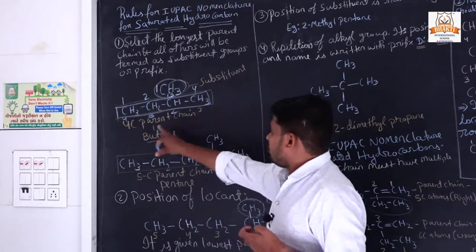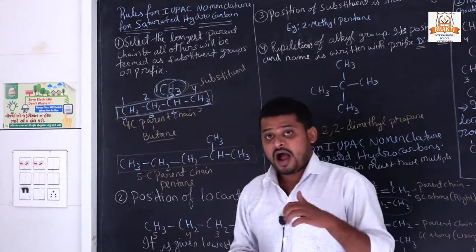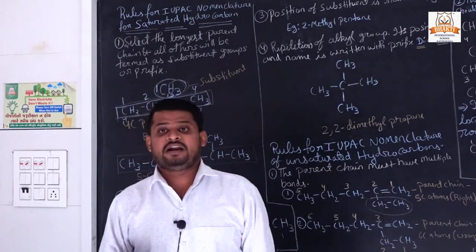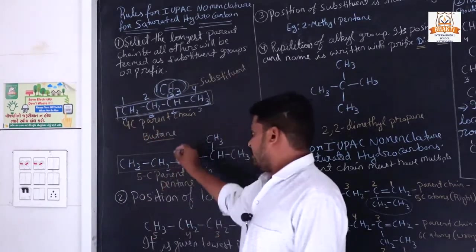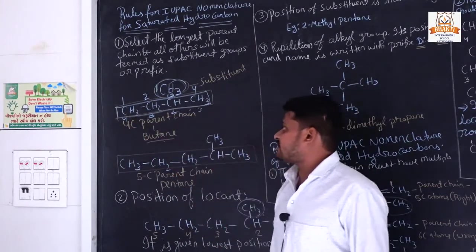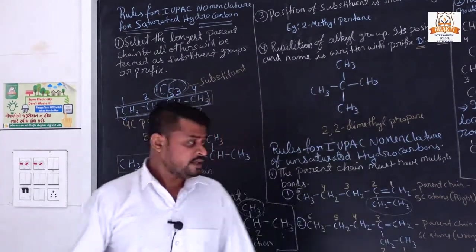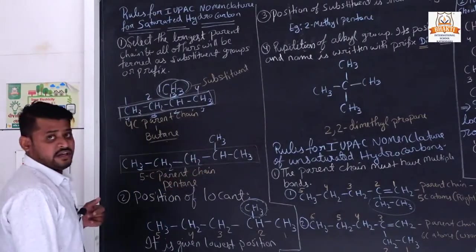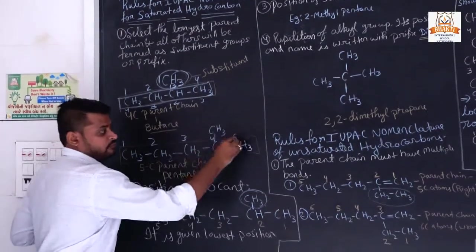So what is the name? The parent chain has 4 carbon atoms — if there are four carbon atoms it is butane. Now another example: in this chain one, two, three, four, five — there are five carbon atoms, which is our parent chain because it is the longest chain in the structural formula.